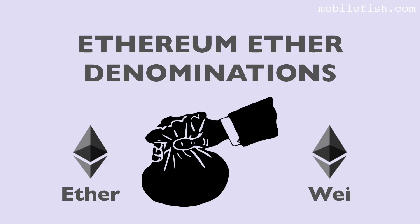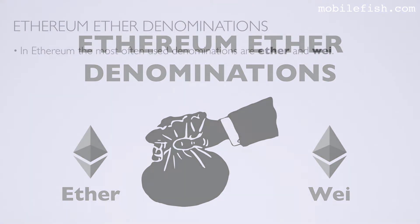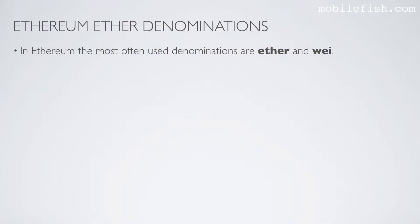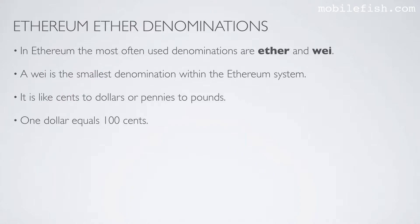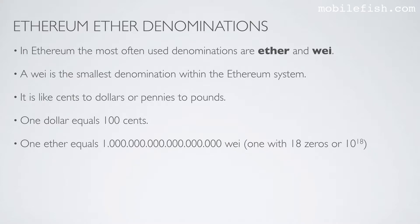In this video I'm going to talk about the Ethereum Ether denominations. In Ethereum the most often used denominations are Ether and Wei. A Wei is the smallest denomination within the Ethereum system. It is like cents to dollars or pennies to pounds. One dollar equals one hundred cents. One Ether equals one Exa Wei, that is a one with 18 zeros, or 10 to the power of 18.